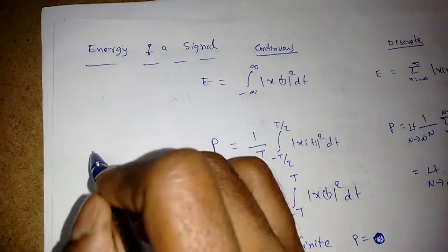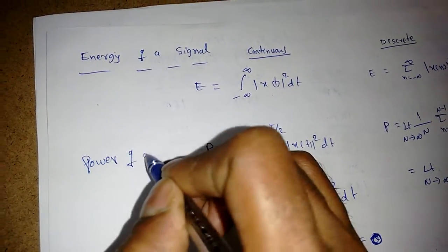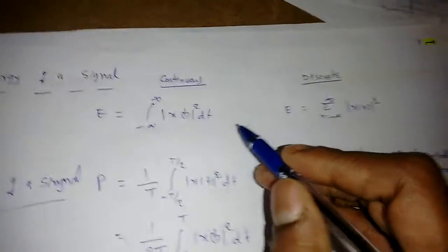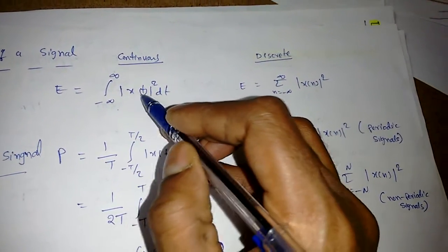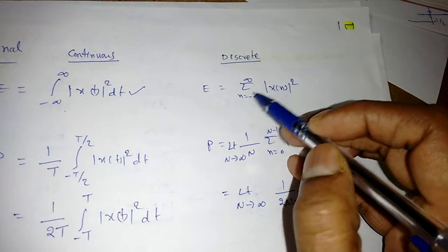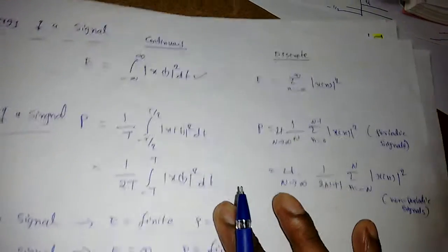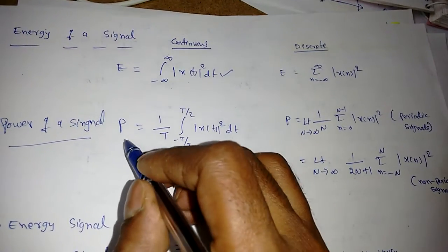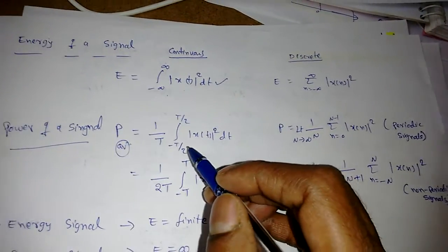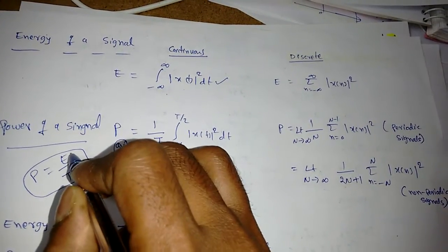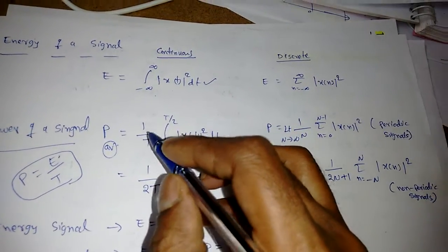Next, we look at how to find the energy or power of a signal. The energy of a continuous signal is E = ∫_{-∞}^{∞} |x(t)|² dt. For discrete signals, it is E = Σ_{n=-∞}^{∞} |x[n]|². The average power is generally energy divided by the time period: P = (1/T)∫_{-T/2}^{T/2} |x(t)|² dt.